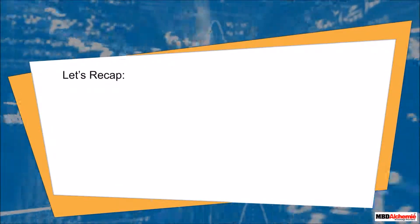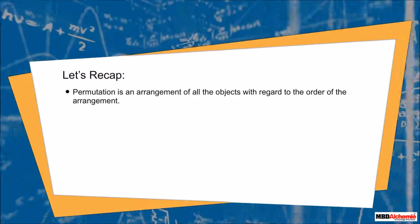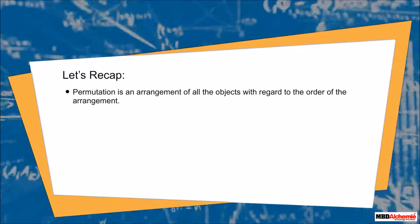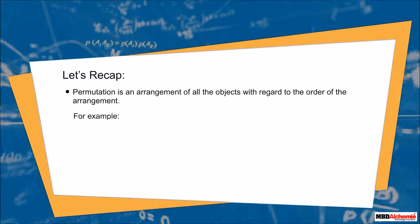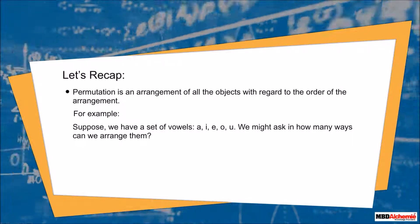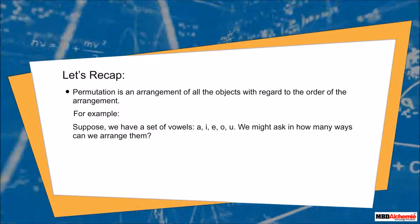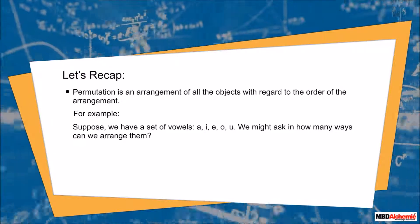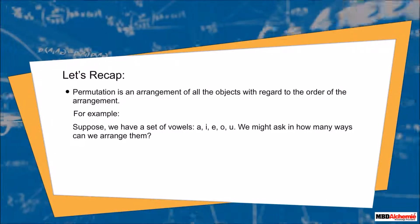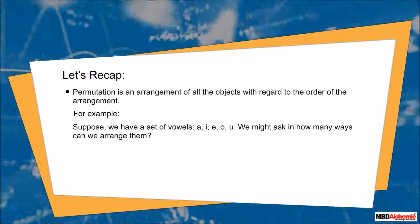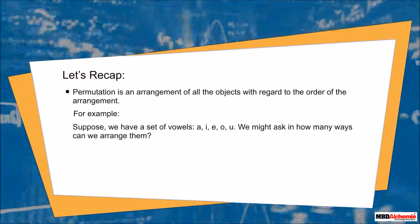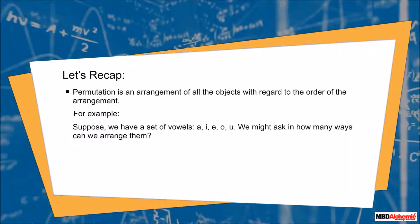Let's recap. Permutation is an arrangement of all the objects with regard to the order of the arrangement. For example, suppose we have a set of vowels: a, i, e, o, u. We might ask in how many ways can we arrange them. Each possible arrangement would be an example of a permutation.